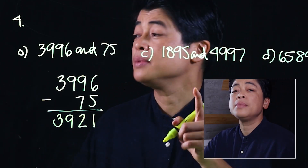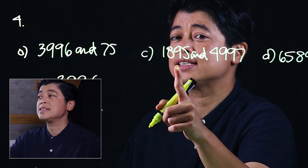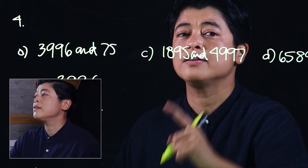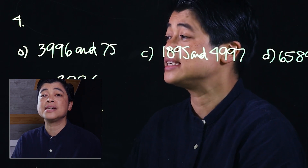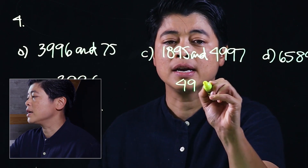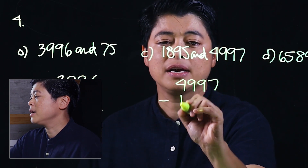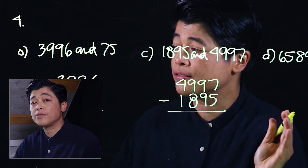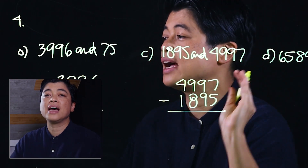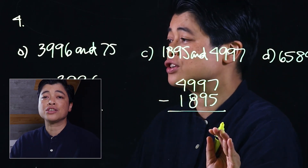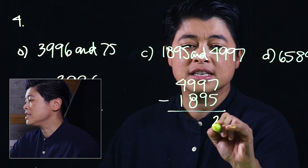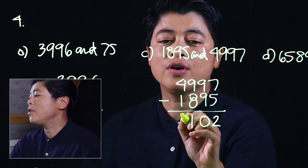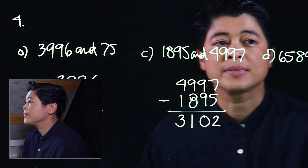Similarly for the next problem: the difference between one thousand eight hundred ninety-five and four thousand nine hundred ninety-seven. The bigger number is four thousand nine hundred ninety-seven minus one thousand eight hundred ninety-five. We subtract from the right going to the left: two, nine minus nine is zero, nine minus eight is one, four minus one is three.